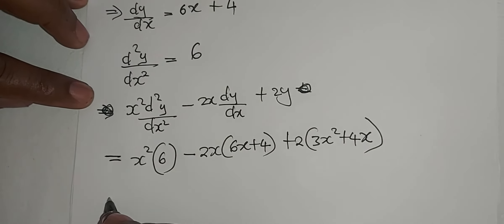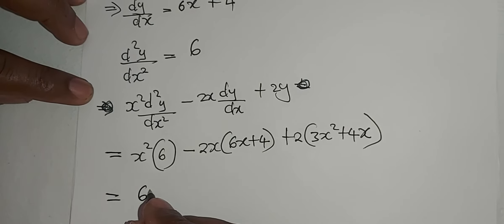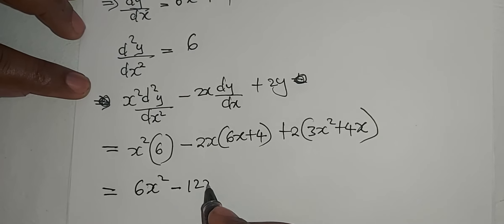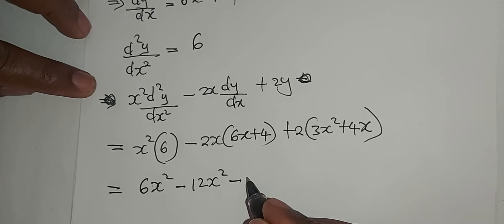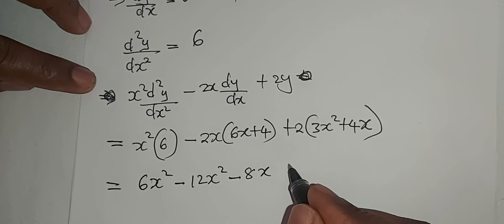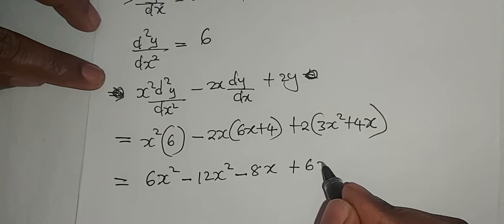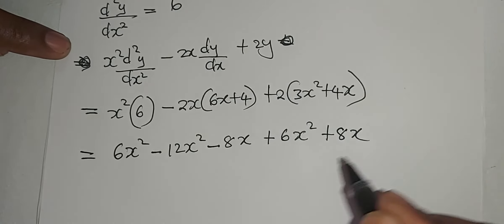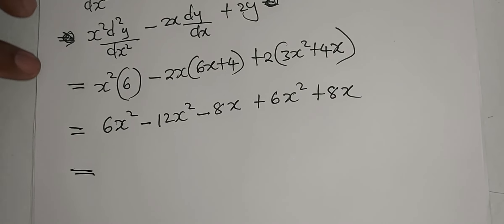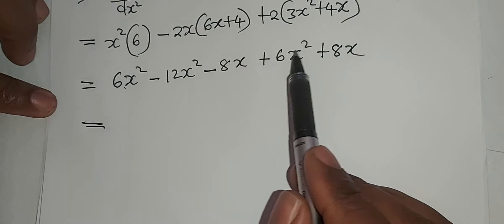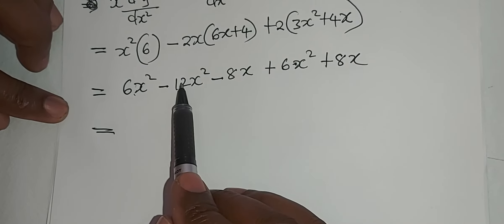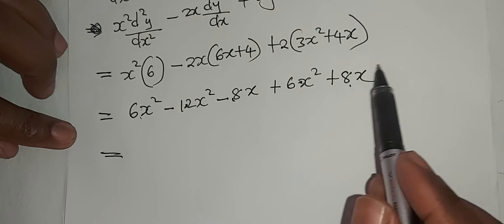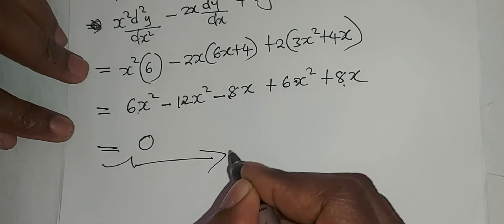Which means now it will be 6x squared minus 12x squared minus 8x plus 6x squared plus 8x, which is equal to 6x squared plus 6x squared, that's 12x squared minus 12x squared that's 0. Minus 8x plus 8x, this cancels, so the answer becomes 0. Yes, proved.